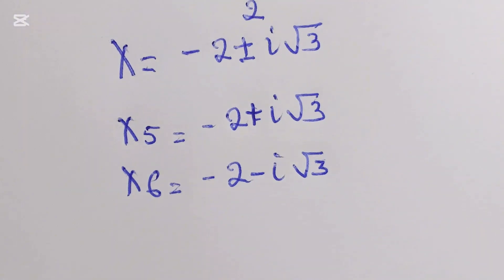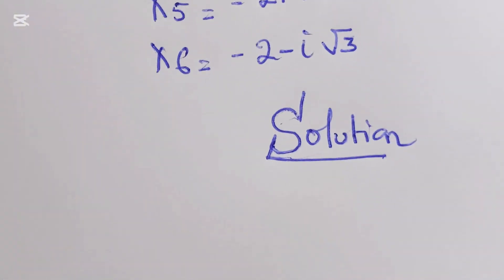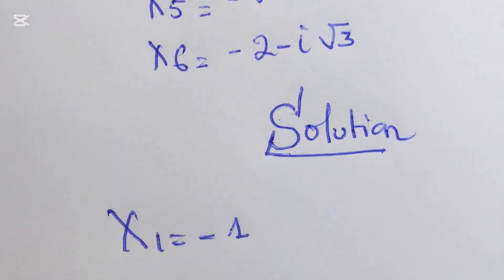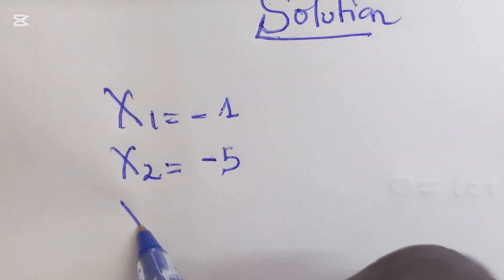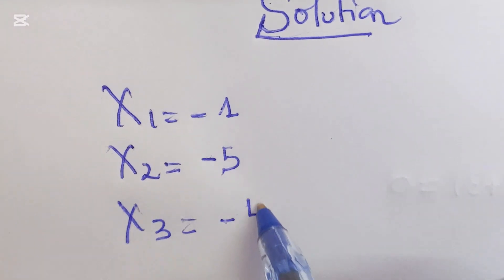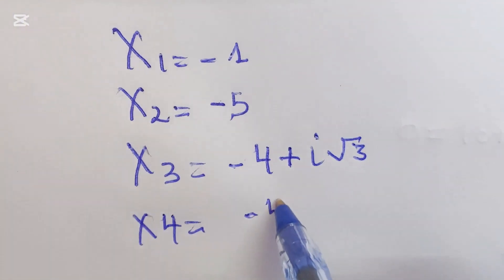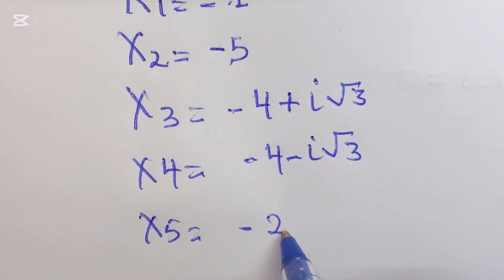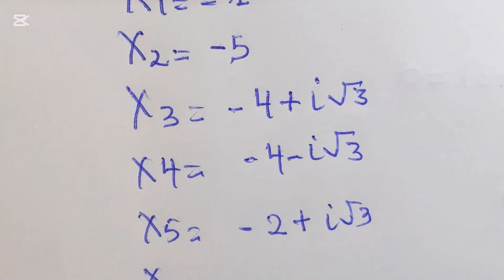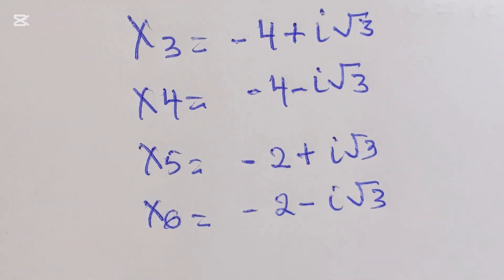Our solution set is: x1 equals negative 1, x2 and x3 equal negative 4 plus or minus i square root of 3, x4 equals negative 5, and x5 and x6 equal negative 2 plus or minus i square root of 3. Thanks for watching. Don't forget to share and subscribe. See you next time.